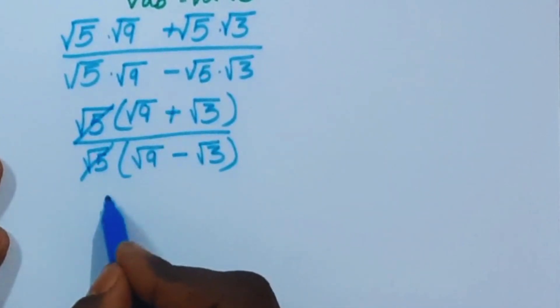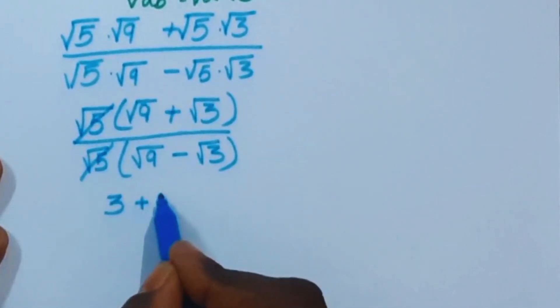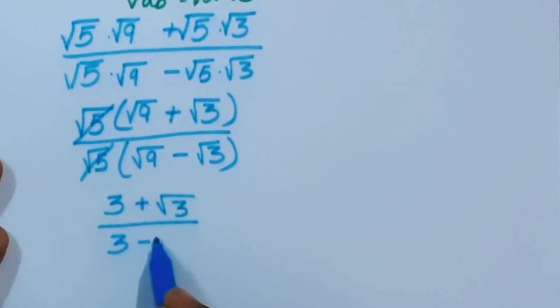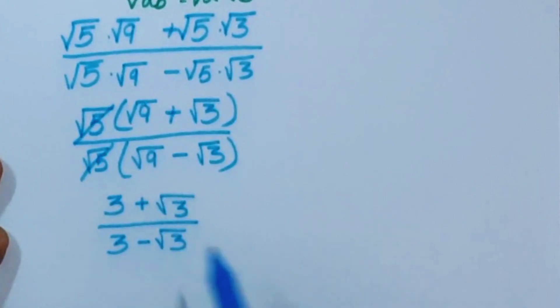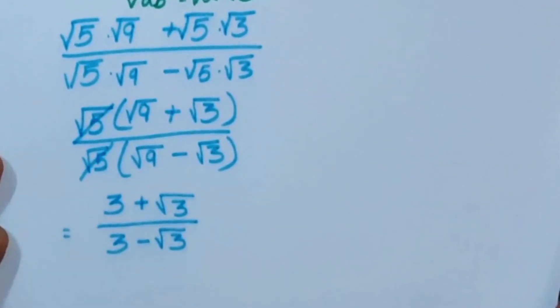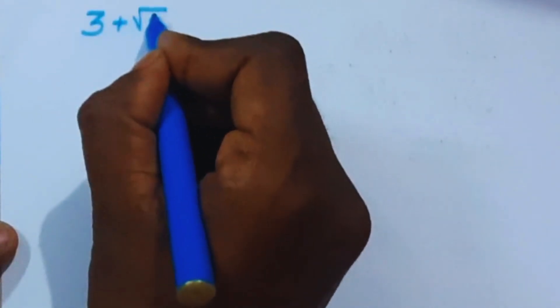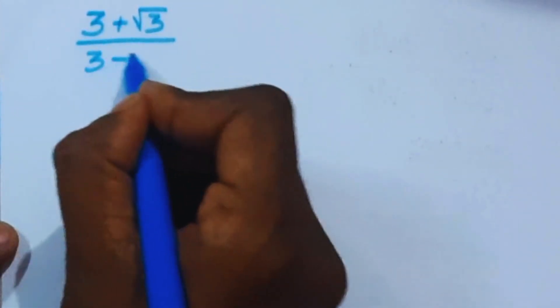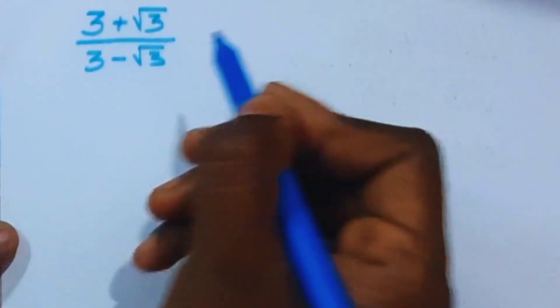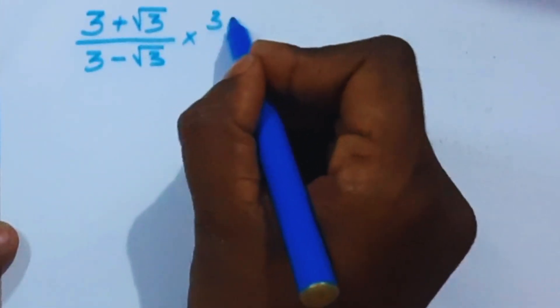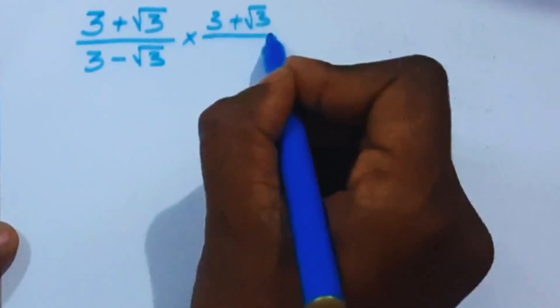So we have: square root of 9 is 3, plus square root of 3, divided by 3 minus square root of 3. Now we multiply by the conjugate: 3 plus square root of 3, over 3 plus square root of 3.